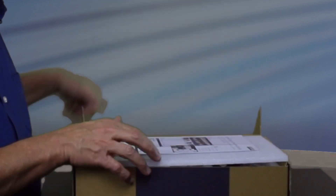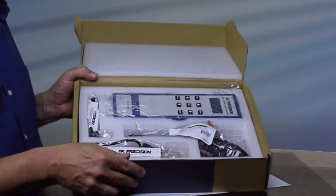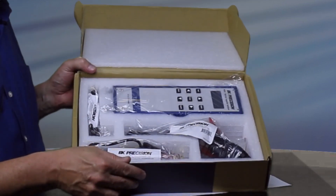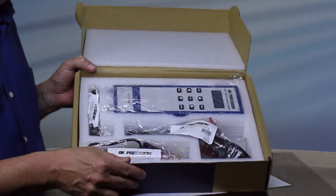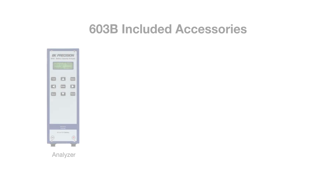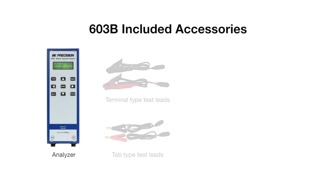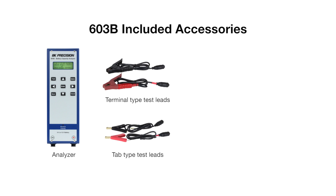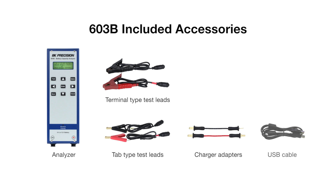Taking a look at what's in the box: instructions to download the latest user manual, a Certificate of Calibration with Calibration Report, the 603B Analyzer, two different sets of twist-lock battery test leads, a set of adapters for testing the charger circuit, and a USB cable for connecting to the computer.